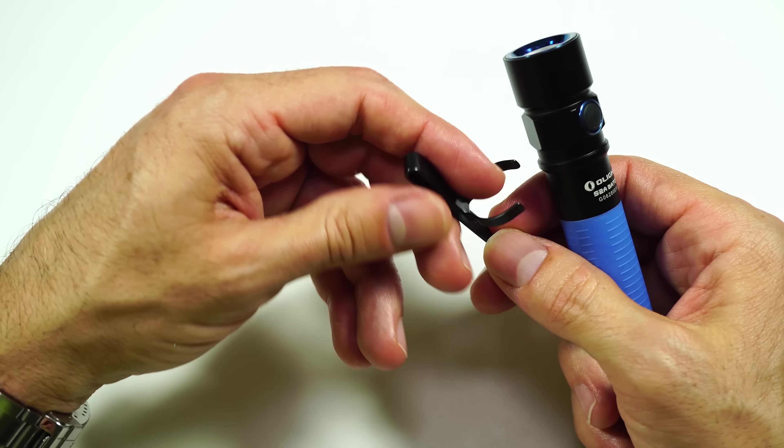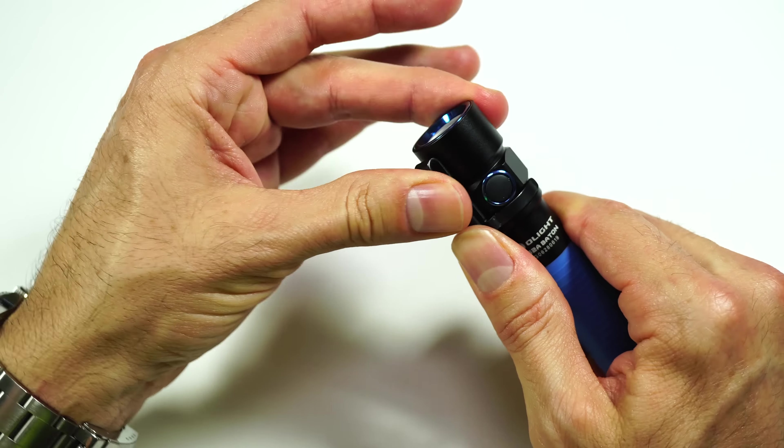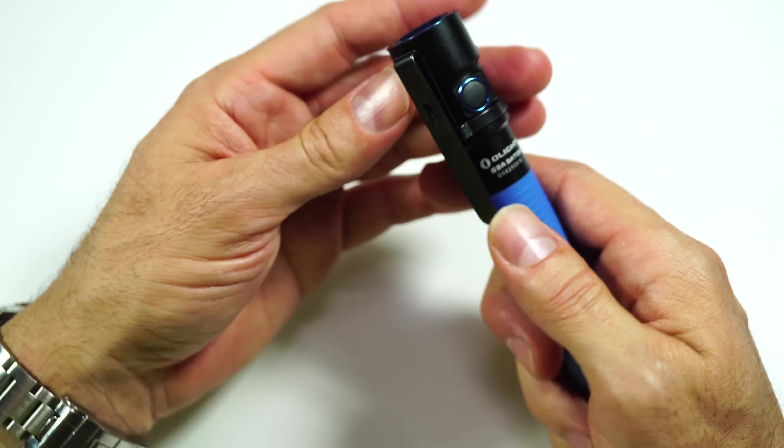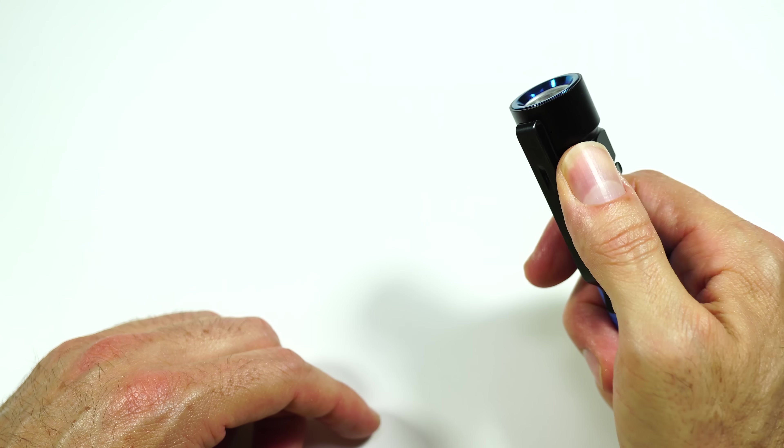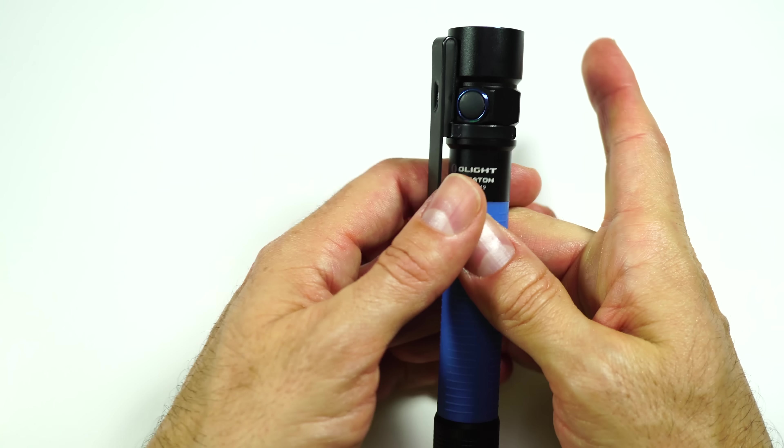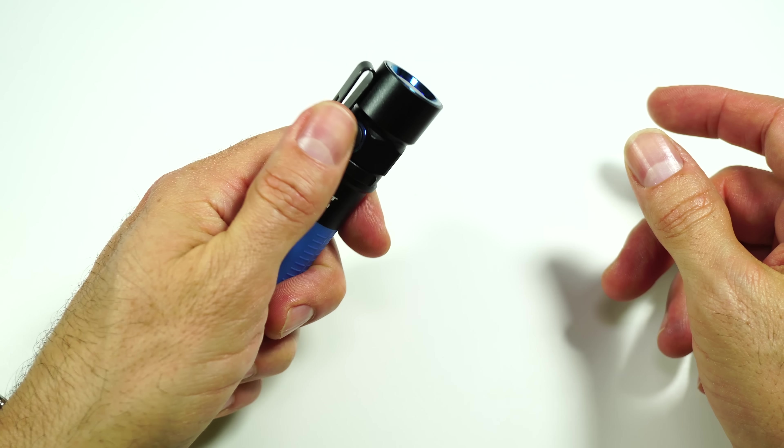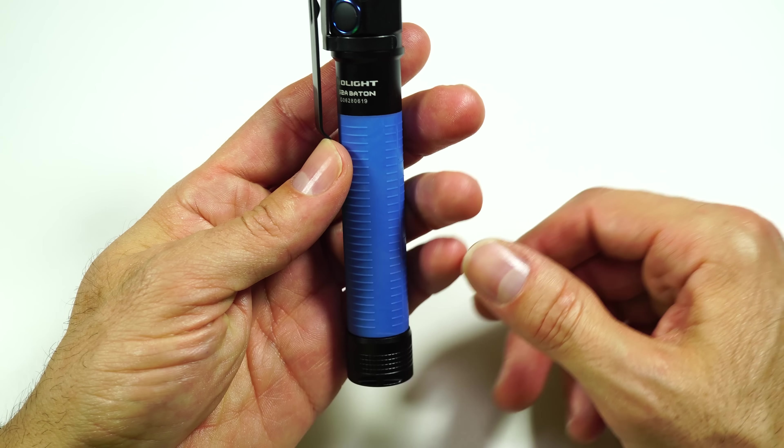But one of the ways that I have kind of gotten around that is I put the pocket clip on, and I put the pocket clip right next to the button. And so I feel the pocket clip, and then I know that my finger is automatically going to go down onto that button every time, right-handed or left-handed. So that's one way you can account for that.